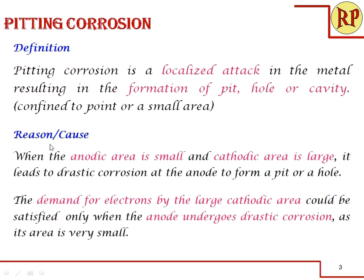Let us look into the detailed reason for pitting corrosion. When the anodic area is small and the cathodic area is large, it leads to drastic corrosion at the anode to form a pit or a hole. We will see why this happens.